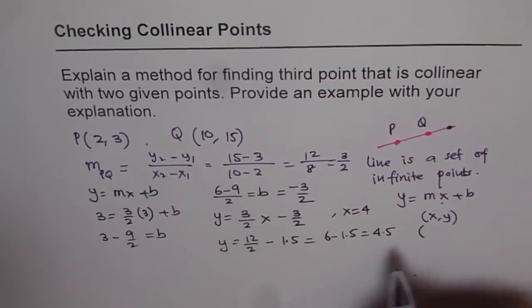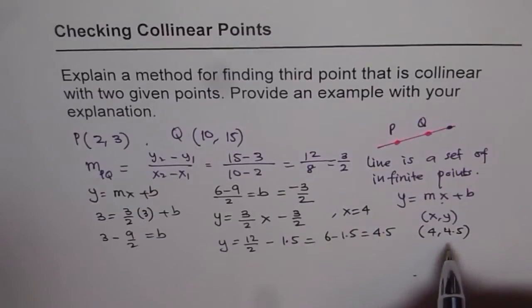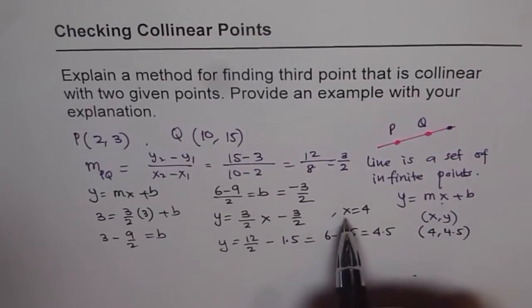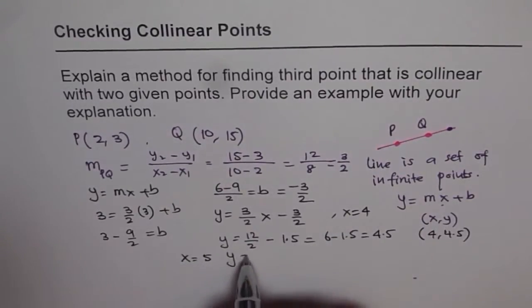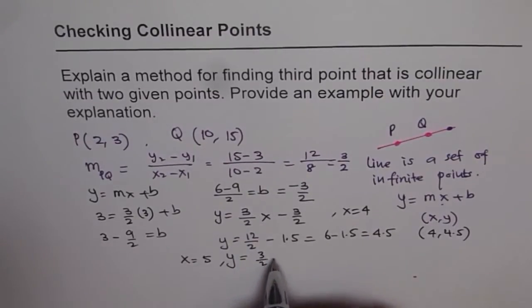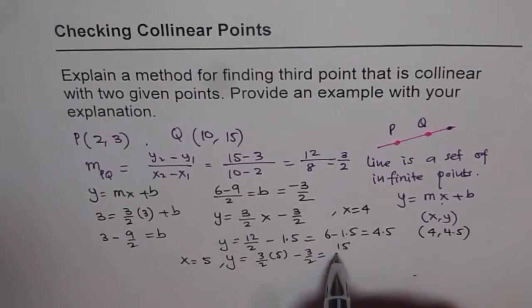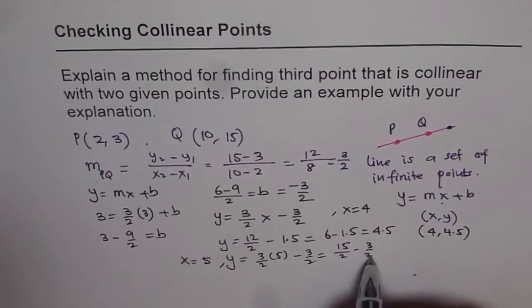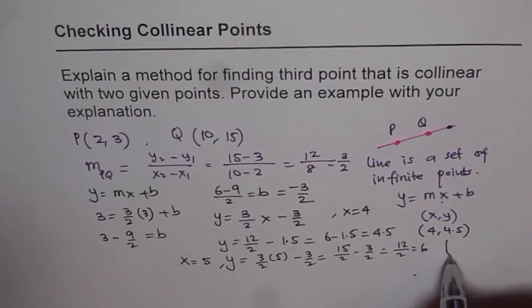And therefore, the point 4, 4.5 will lie on this line. You can find more points by placing different values for X. For example, if I write X equals 5, then we get Y equals 3 over 2 times 5 minus 3 over 2, which is 15 over 2 minus 3 over 2. 15 minus 3 is 12, so 12 over 2 is 6. In that case, the next point could be 5 and 6.